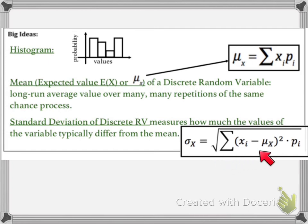And then this formula, you really don't need it. We will be using technology in order to calculate standard deviation, but we will use that to measure how much do the values of the variable typically differ from the mean. All right, so I hope this helped solidify a little bit more of our understanding with discrete random variables. If you do have questions or concerns, please reach out at any time. Thanks for watching, and have a wonderful day.